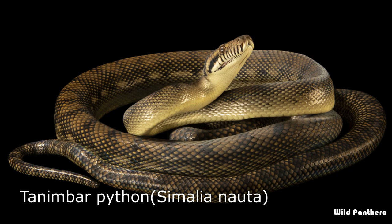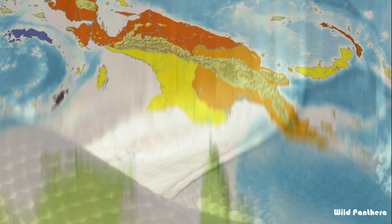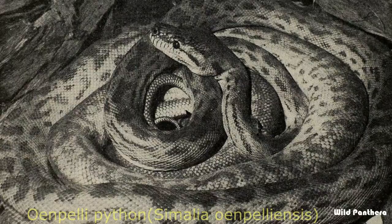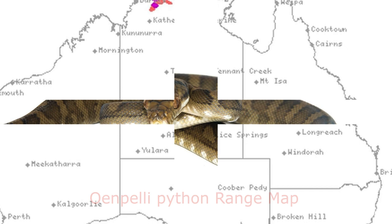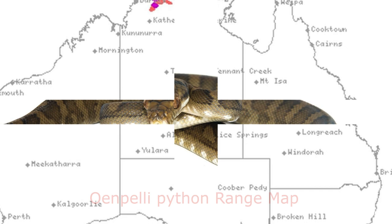Tanimbar Python: This snake belongs to the genus Simalia and is found in Indonesia. Oenpelli Python: This is a species of large snake in the family Pythonidae, endemic to the Northern Territory of Australia. It has been called the rarest python in the world. Halmahera Python: The Halmahera Python is a species of python found only on the Indonesian island of Halmahera.